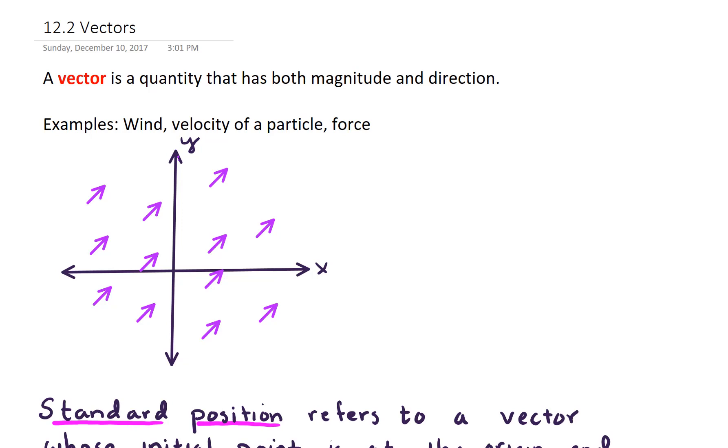For example, wind would be a vector quantity. You could talk about wind coming out of the north at 10 miles per hour. Similarly, you could talk about velocity of a particle as being a vector. The velocity might be 5 meters per second going in a particular direction. You might have also encountered forces. A force is a vector. It's got both magnitude and direction.